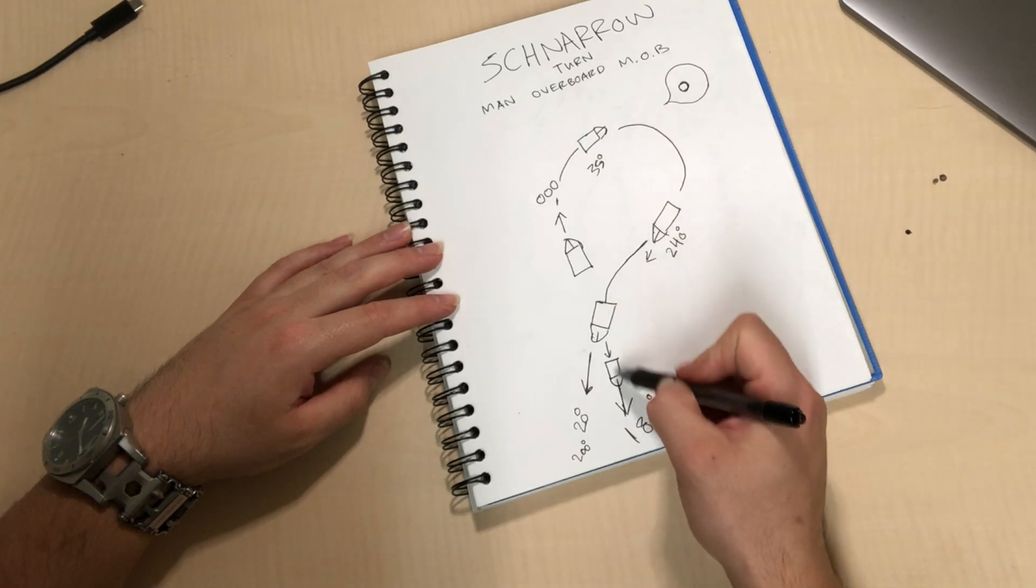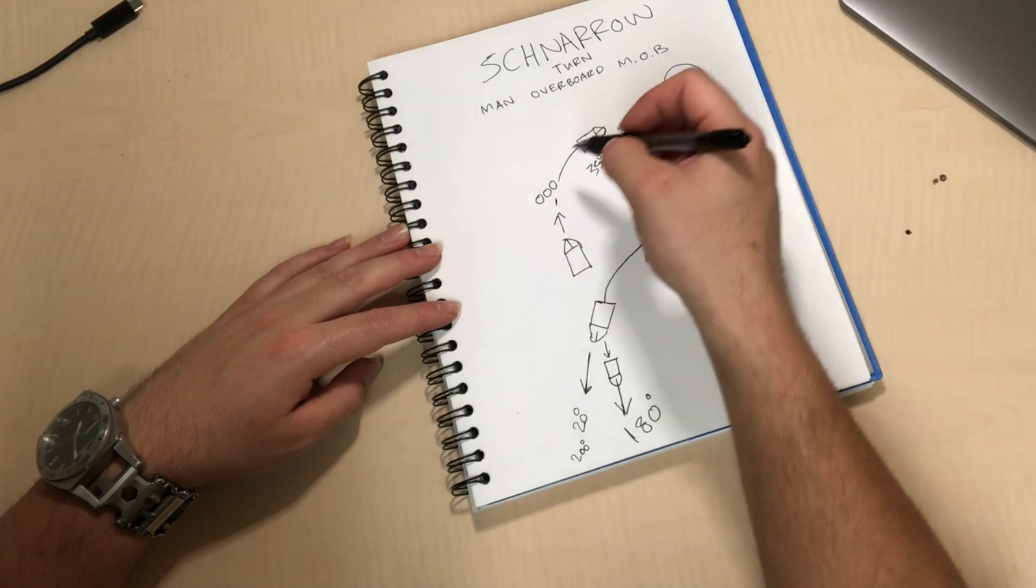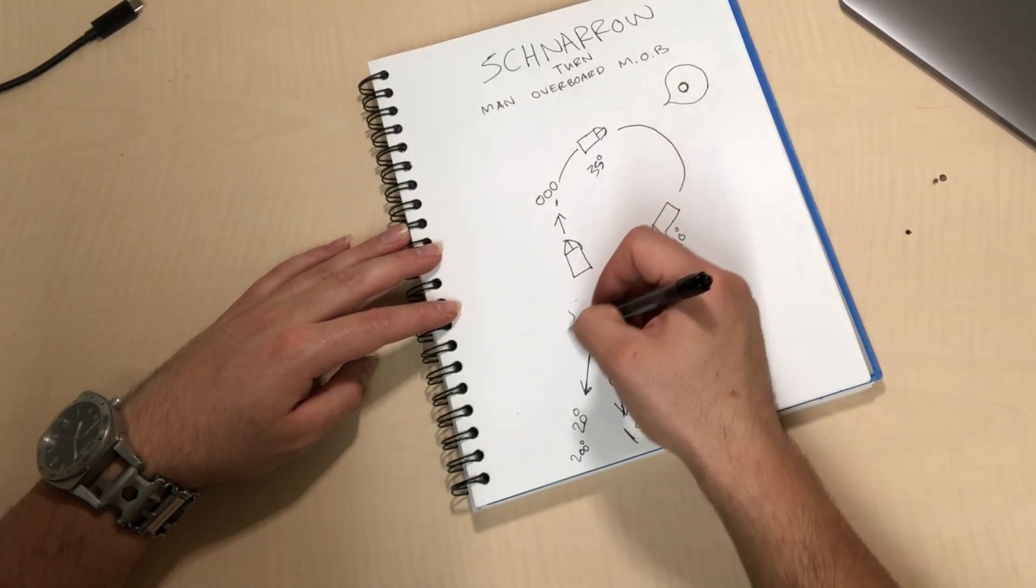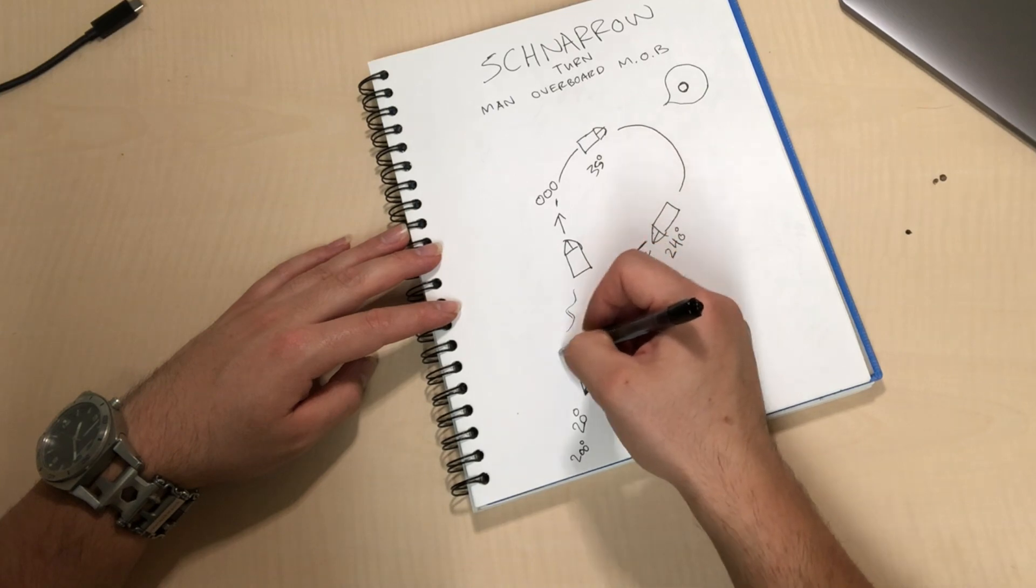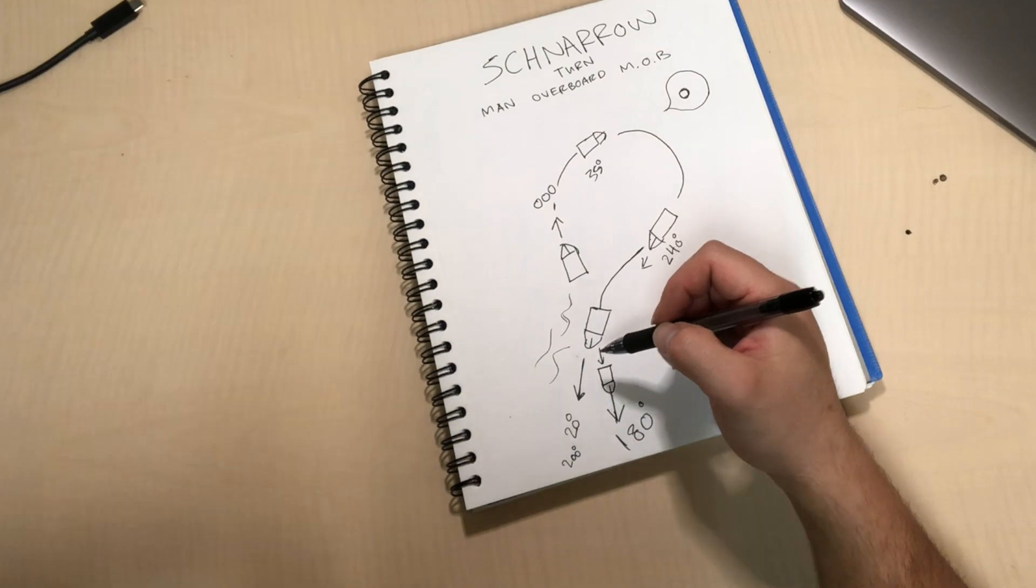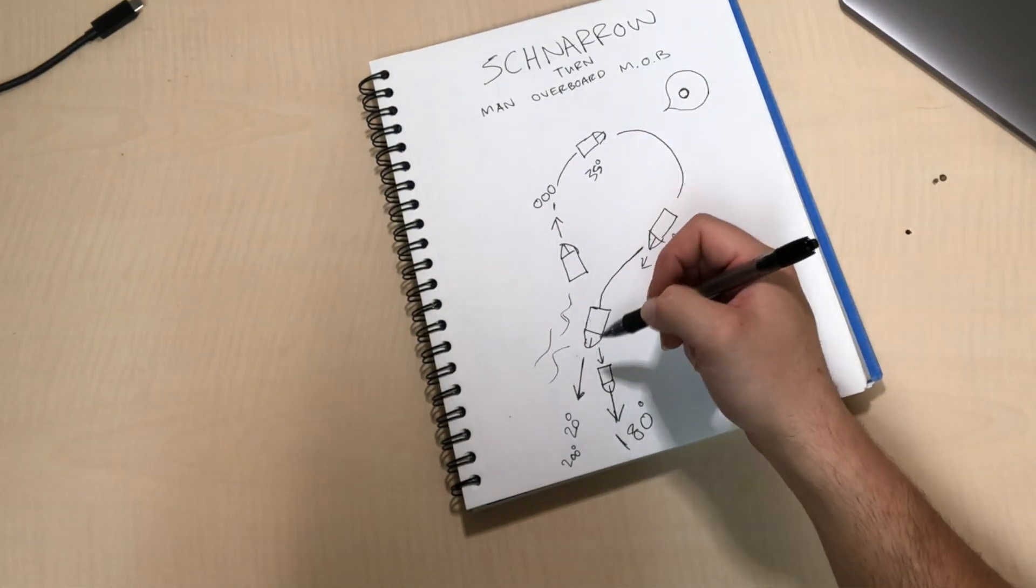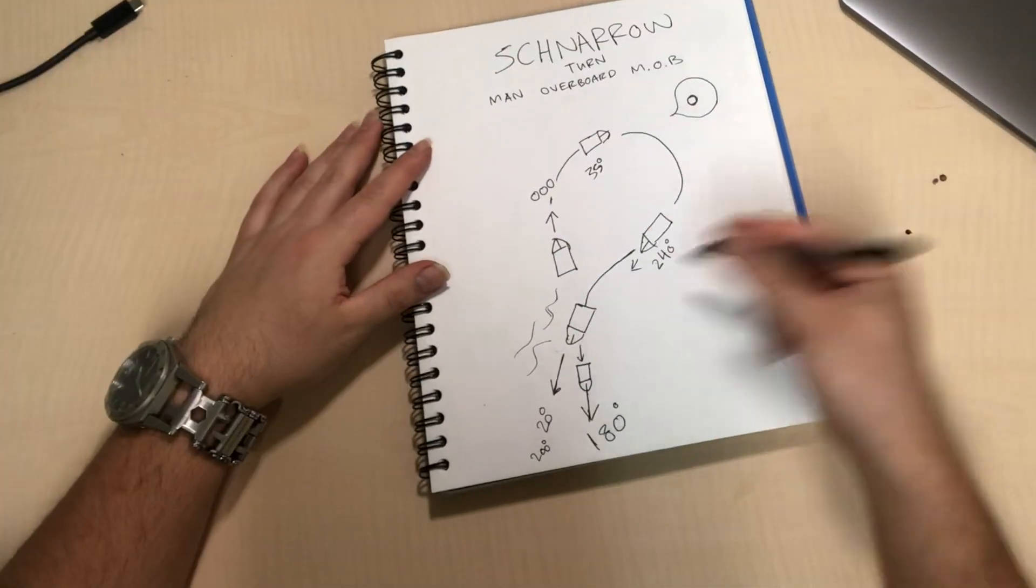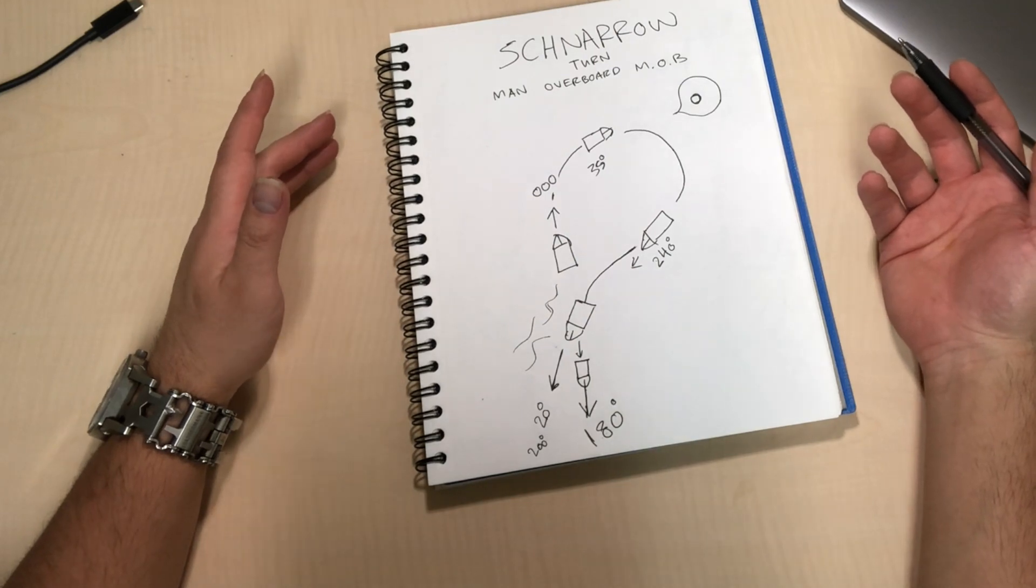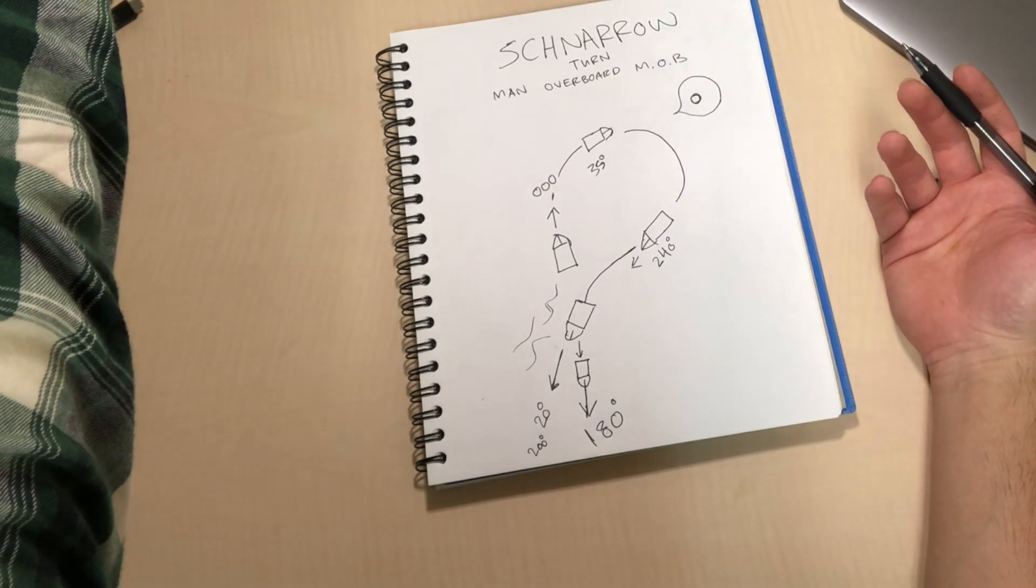The point of the Scharnow turn is it'll take your vessel back into its own wake, because as you turn and come back, this wake from your original course, you're gonna be taken back into your original wake. There's less distance covered, saving time apparently. It's the exact opposite of a Williamson turn, so I believe it's probably the same amount of time.